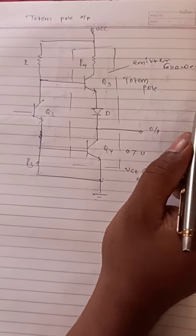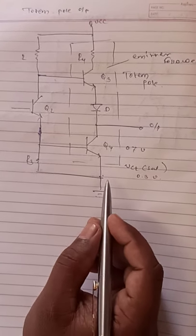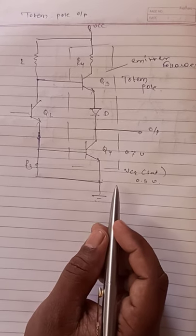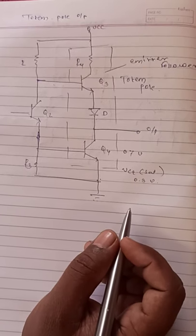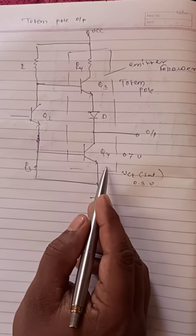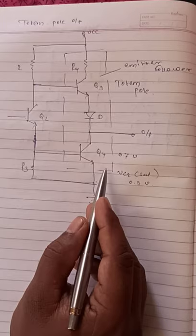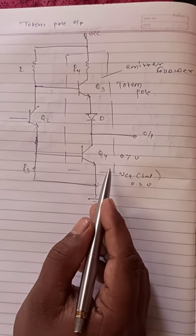One disadvantage of totem pole output: during the transition of the output from low to high, Q4 turns off more slowly than Q3 turns on. Thank you.